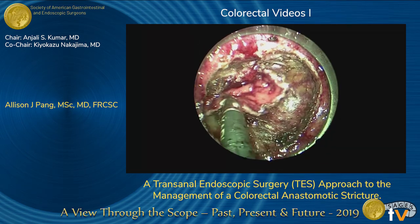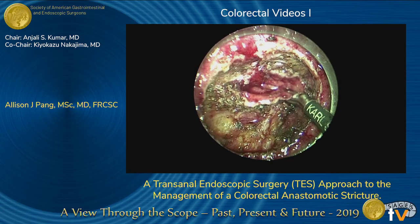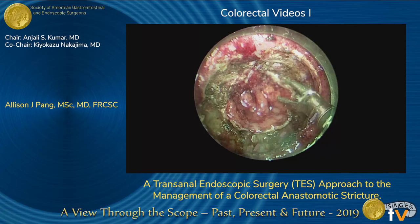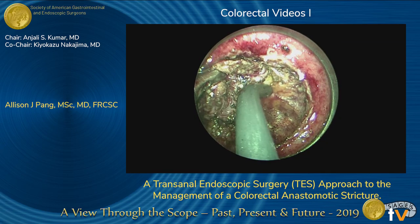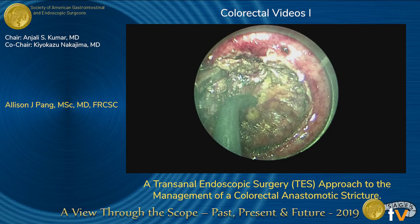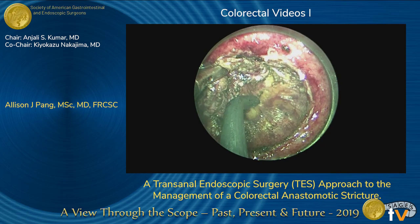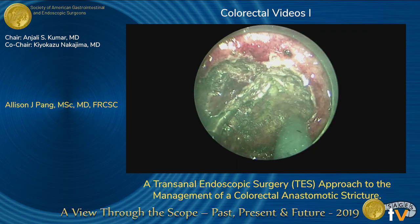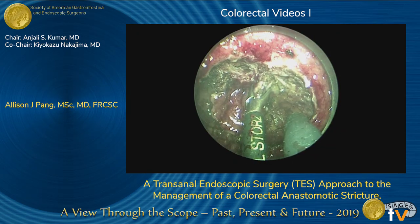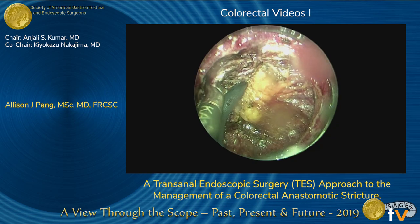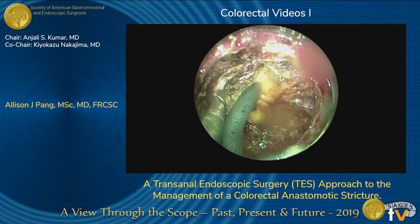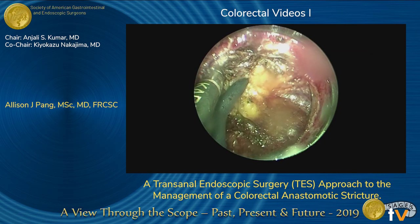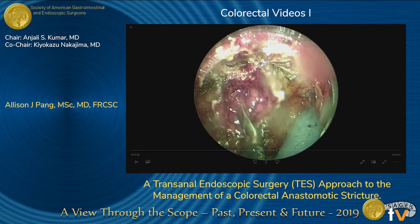We then began our resection, carefully dissecting layer by layer circumferentially until we reached the mesorectum. We did not dissect any further than the mesorectum, as a TME dissection was not indicated or required for this procedure. Here you see us dissecting the stricture off of the mesorectum, and you get a sense of how tight the stricture is and its short length.